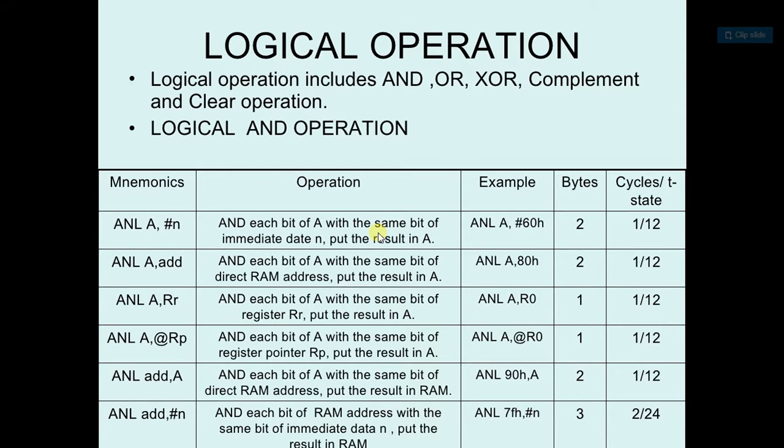See the example ANL A, 60h. Suppose A is equal to 50h. It will do the AND operation between 50h and 60h.